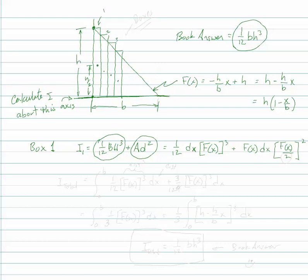And the way this works out, that's true of every box. So what I can say is, I total is the integral from 0 to B, since I'm integrating from there to there, okay, 1/12 F of X cubed times DX plus,